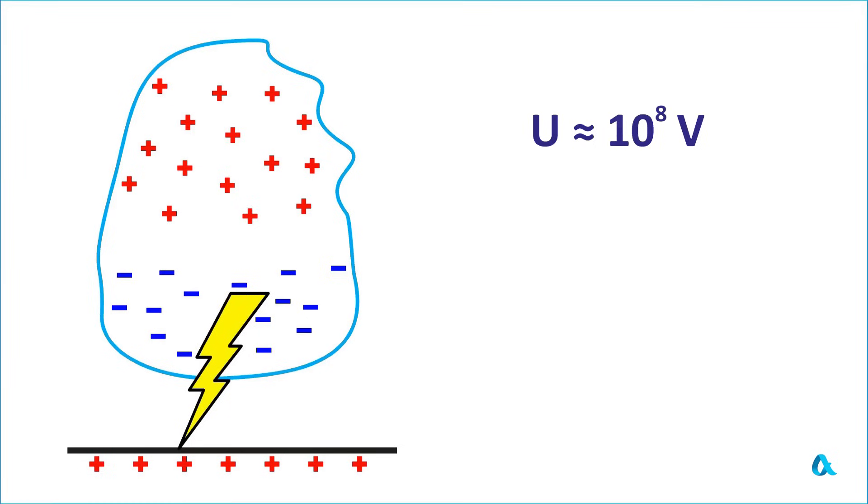A typical lightning bolt carries a negative charge of about 20 coulombs from the cloud to the ground. On Earth, about 100 lightning strikes occur every second, which results in a charging current of around 2,000 amperes. This current compensates for the leakage currents and keeps the Earth's charge constant. So thunderclouds turn out to be unique electric generators that constantly recharge the Earth's capacitor.